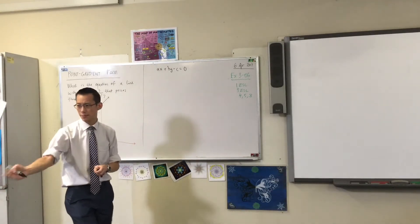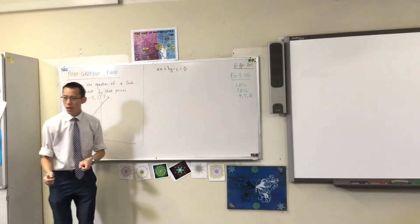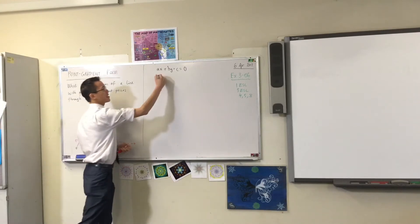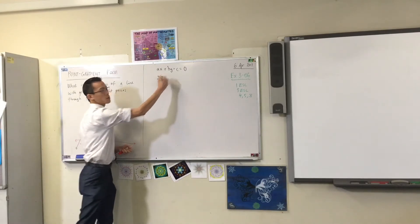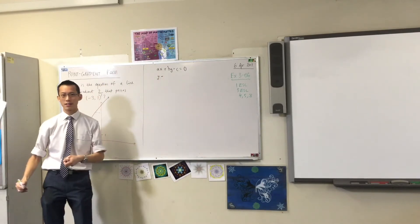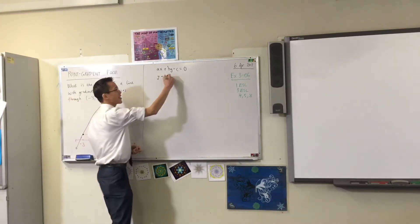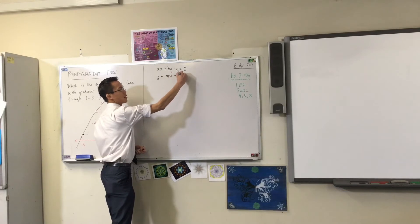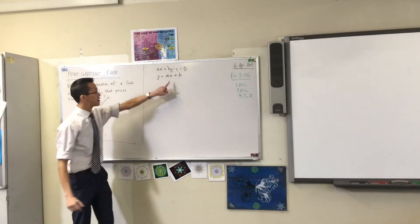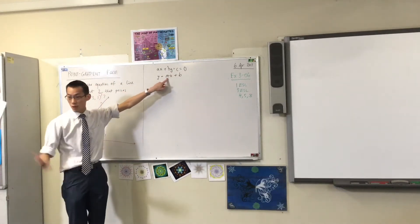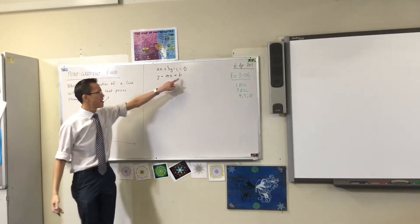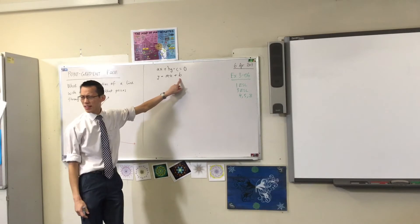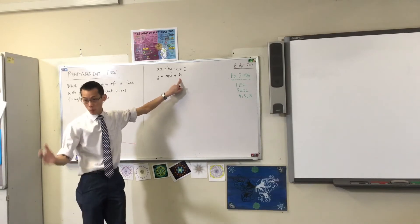The second form is slope-intercept form. That starts with y equals mx plus b. The m is the slope — the gradient — and b is the y-intercept.